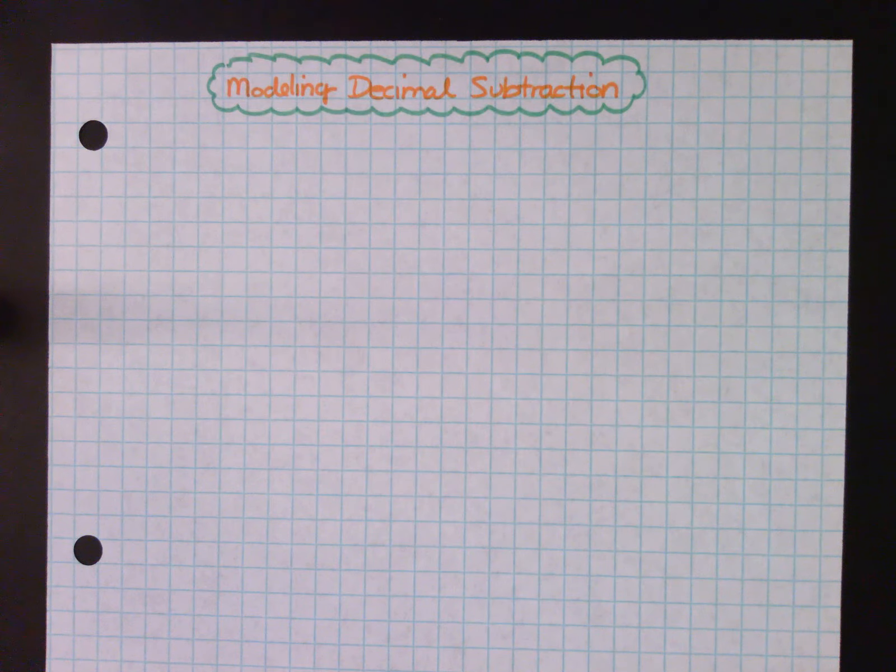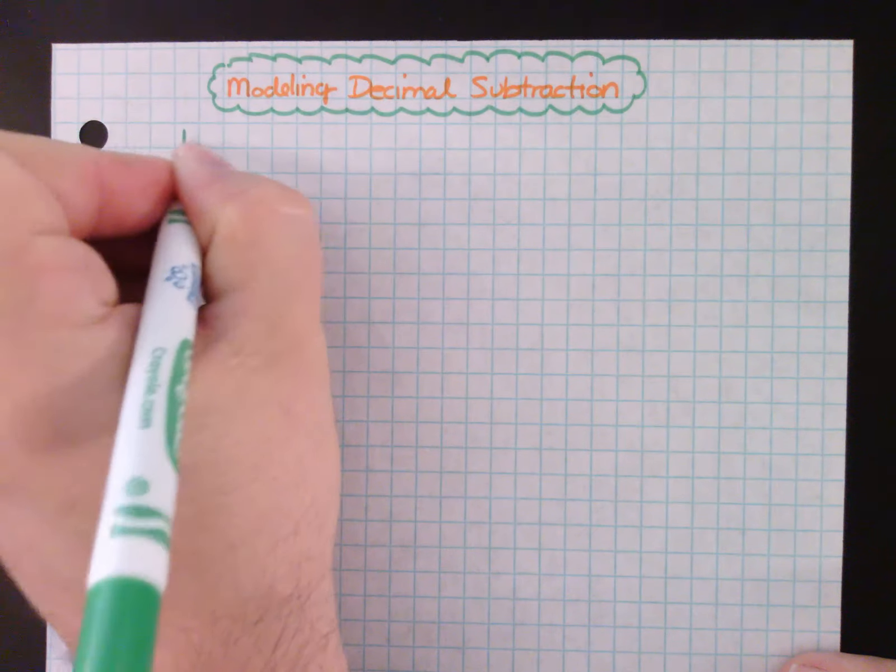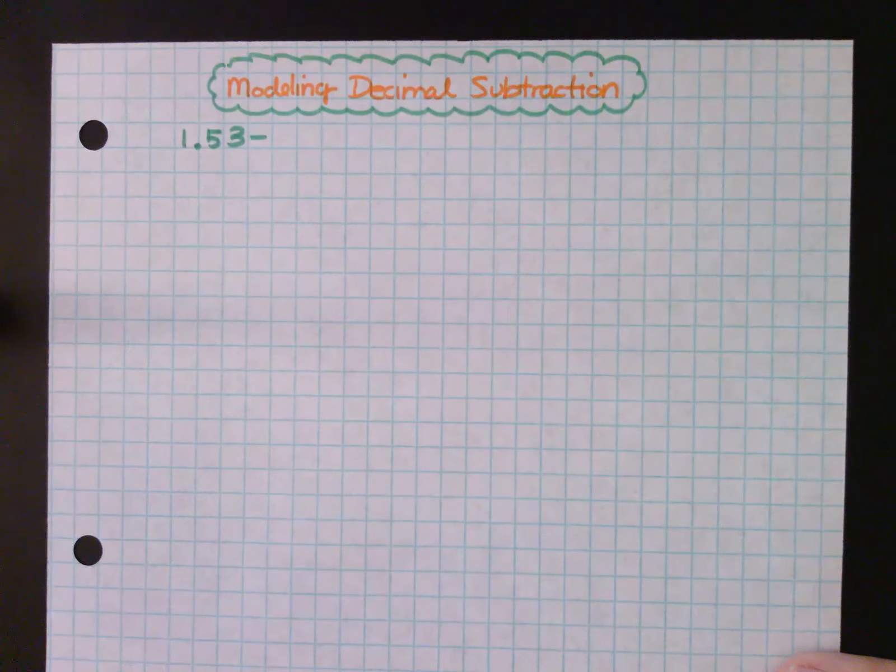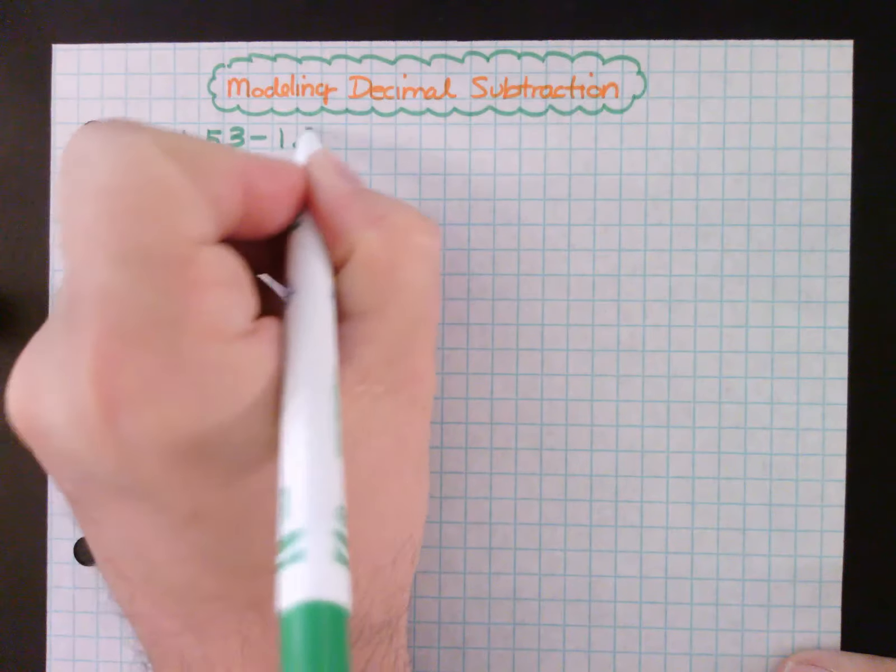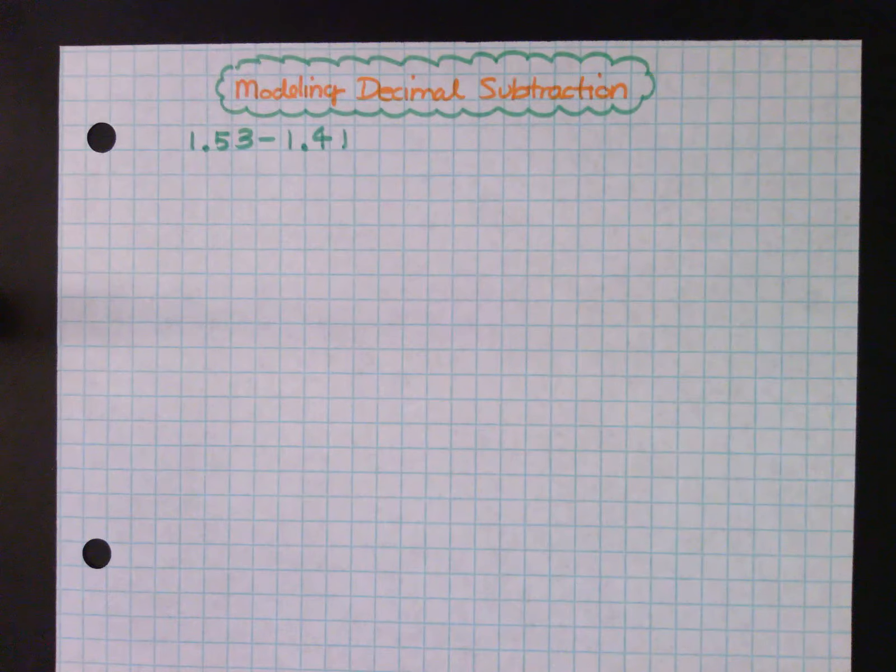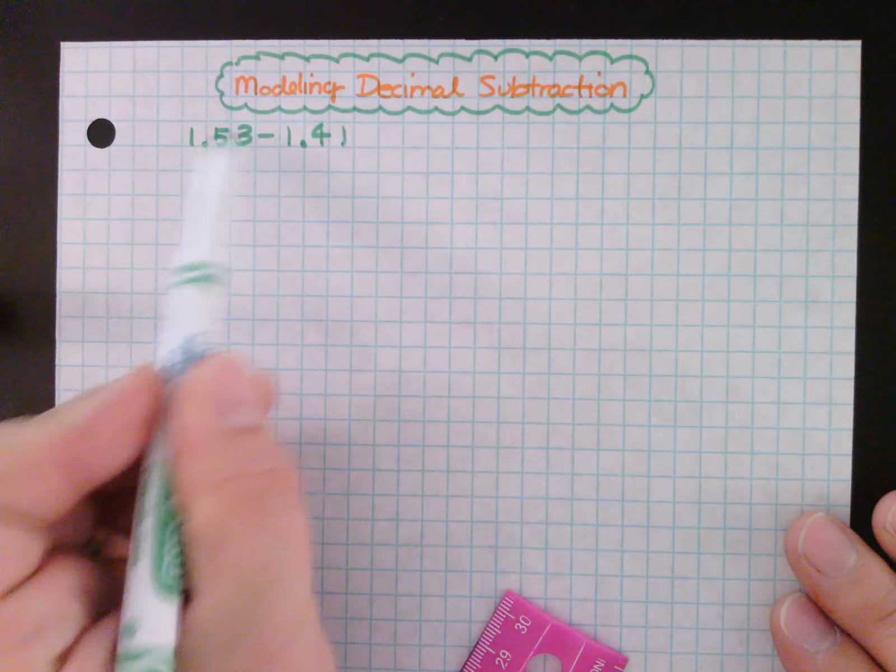So today we're going to talk about modeling decimal subtraction. Say I have 1.53 minus 1.41. Using our 10 by 10 grids, it looks like I'm going to need two full squares to start.